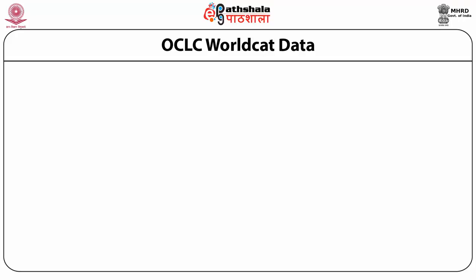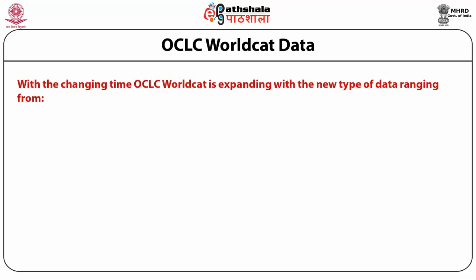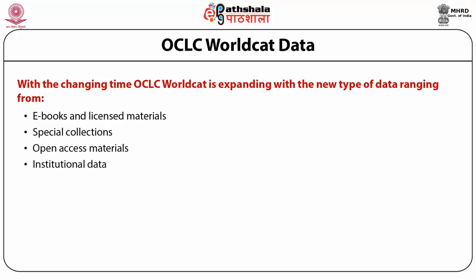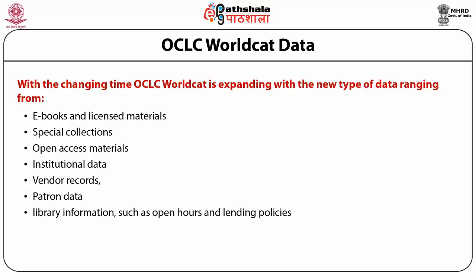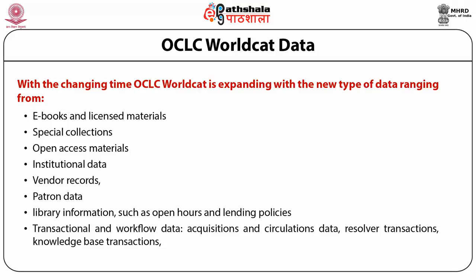WorldCat started as a union catalogue of books, but it is no longer limited to books. With changing times, WorldCat is expanding with new types of data including e-books, licensed materials, special collections, open access materials, institutional data, vendor records, patent data, library information such as open hours and lending policies, transactional and workflow data, acquisition and circulation data, resolver and knowledge base transactions, and search and interlibrary lending data. In one sense, WorldCat has become a virtual library.